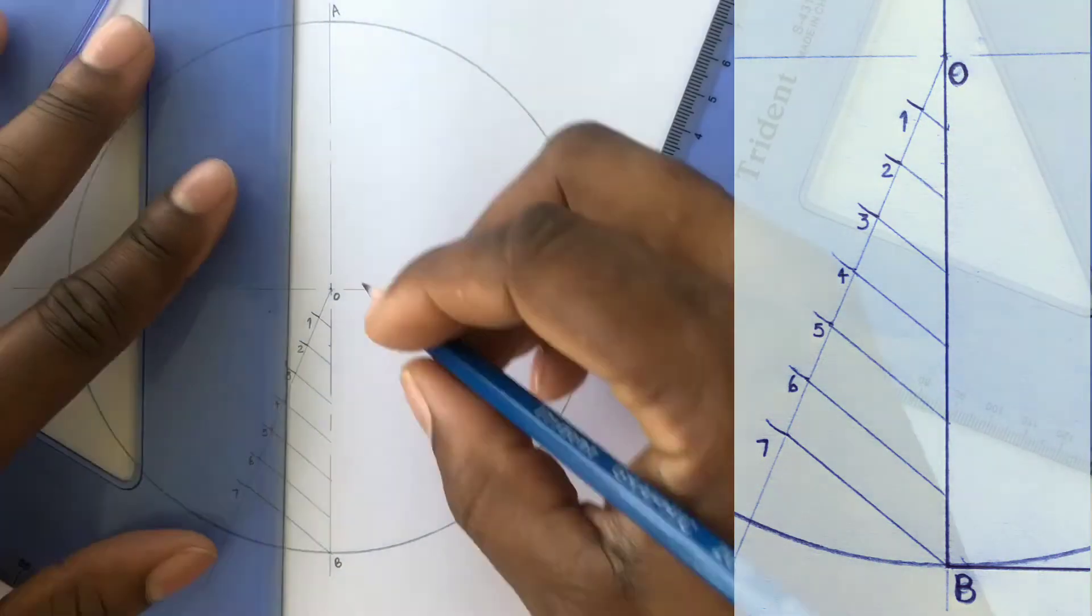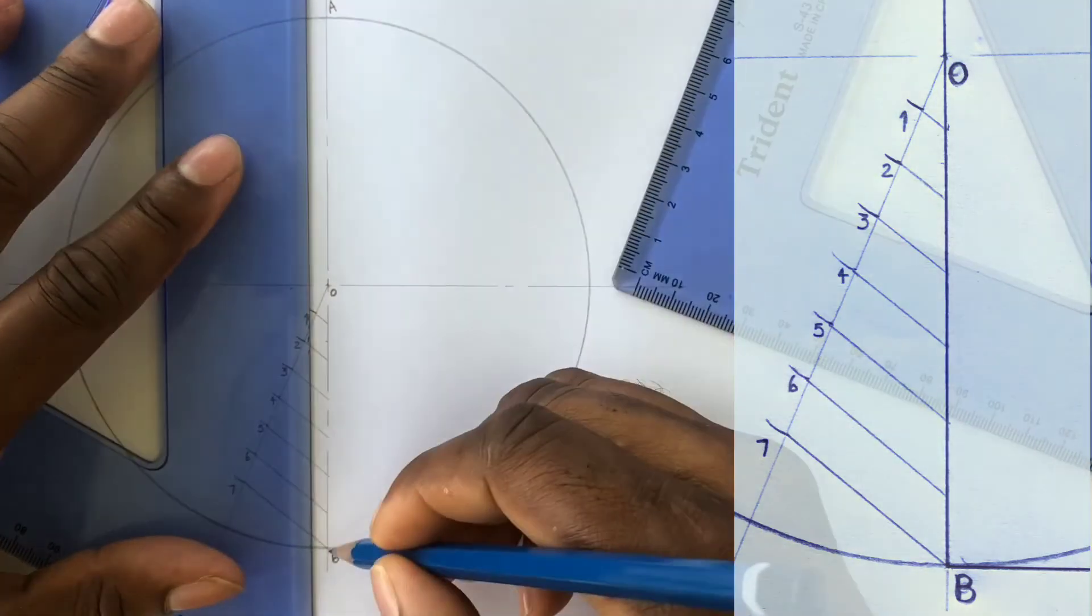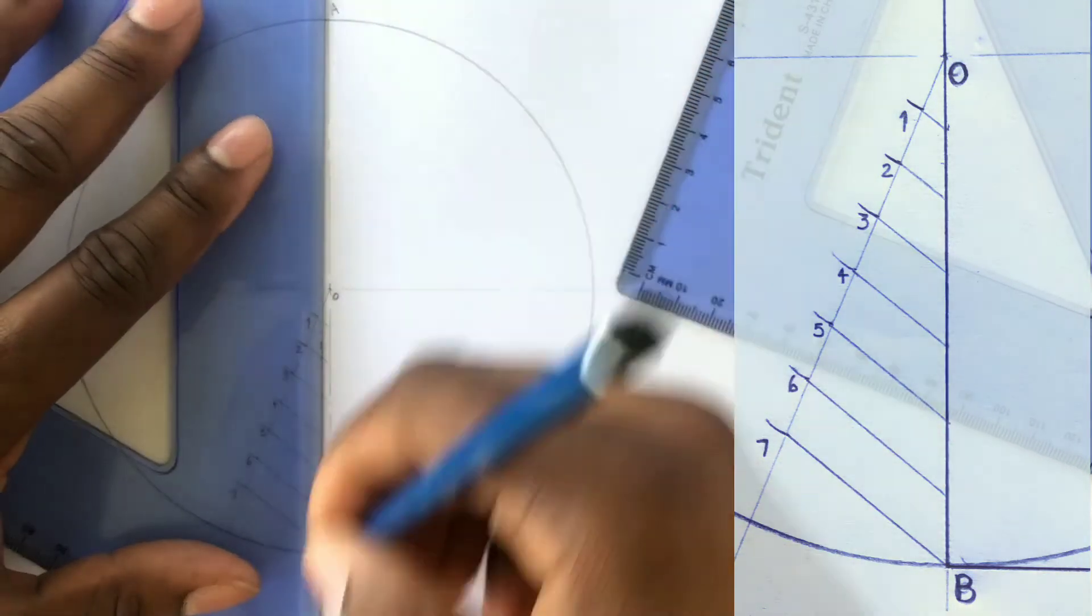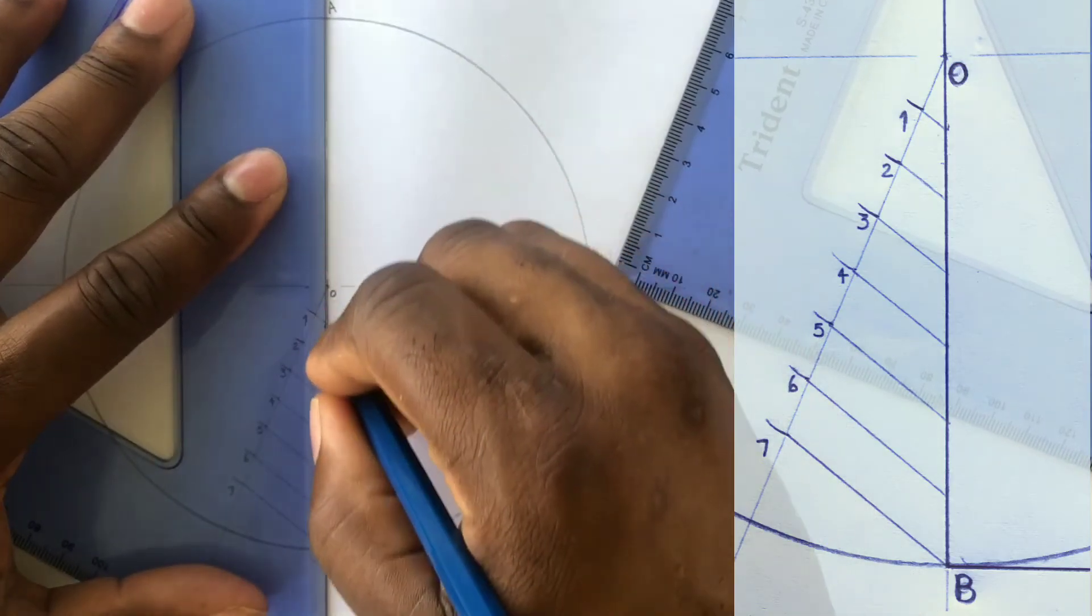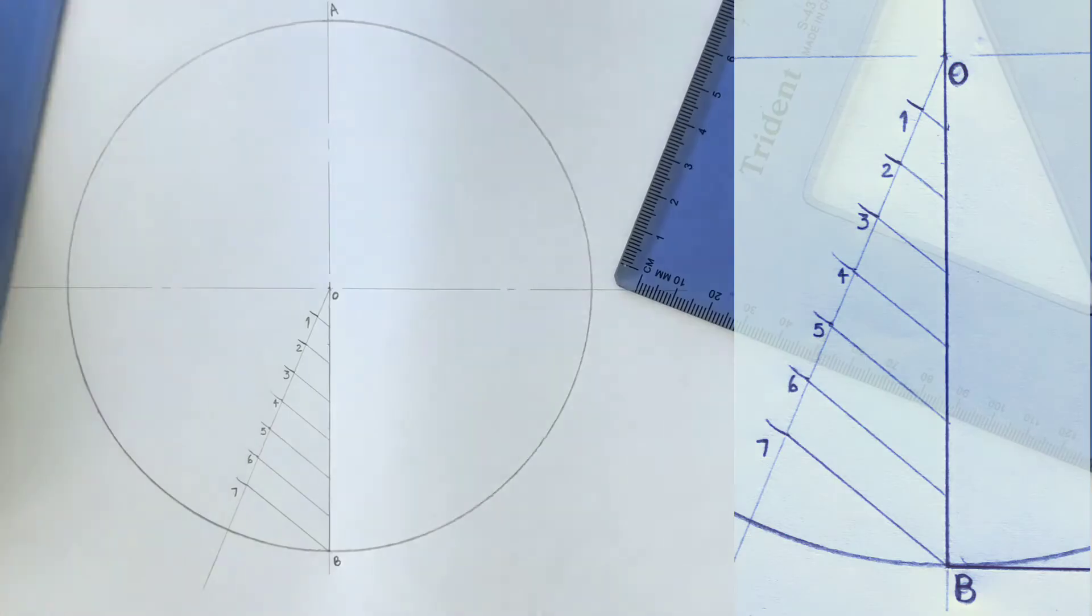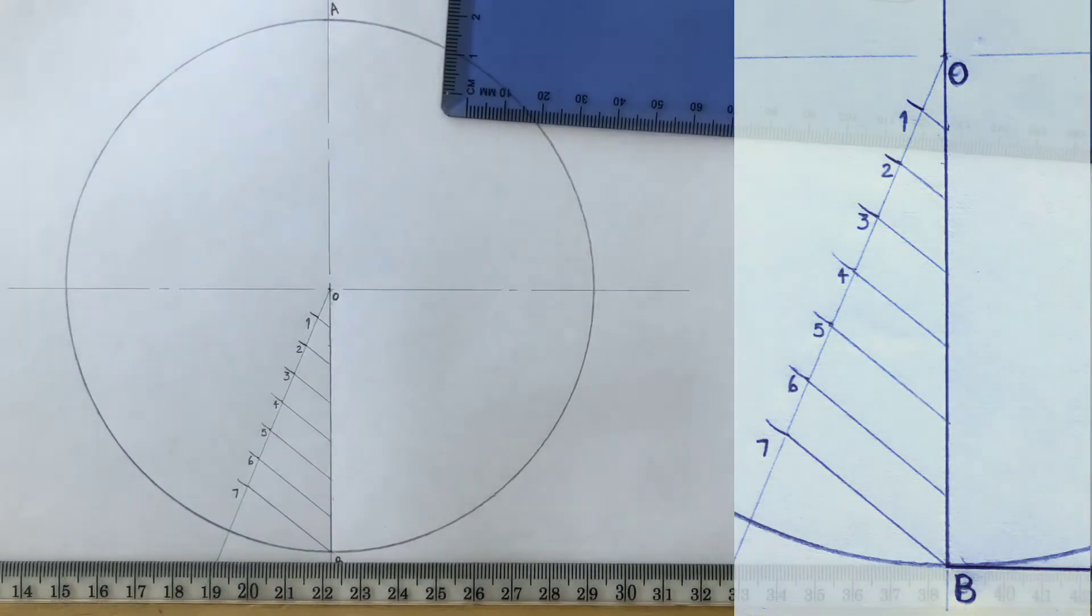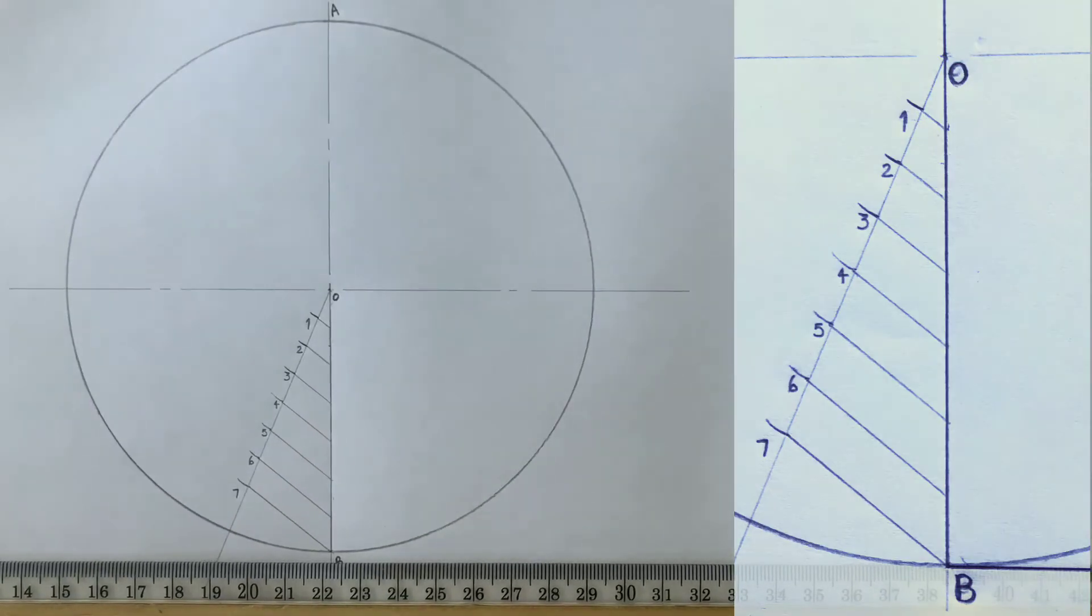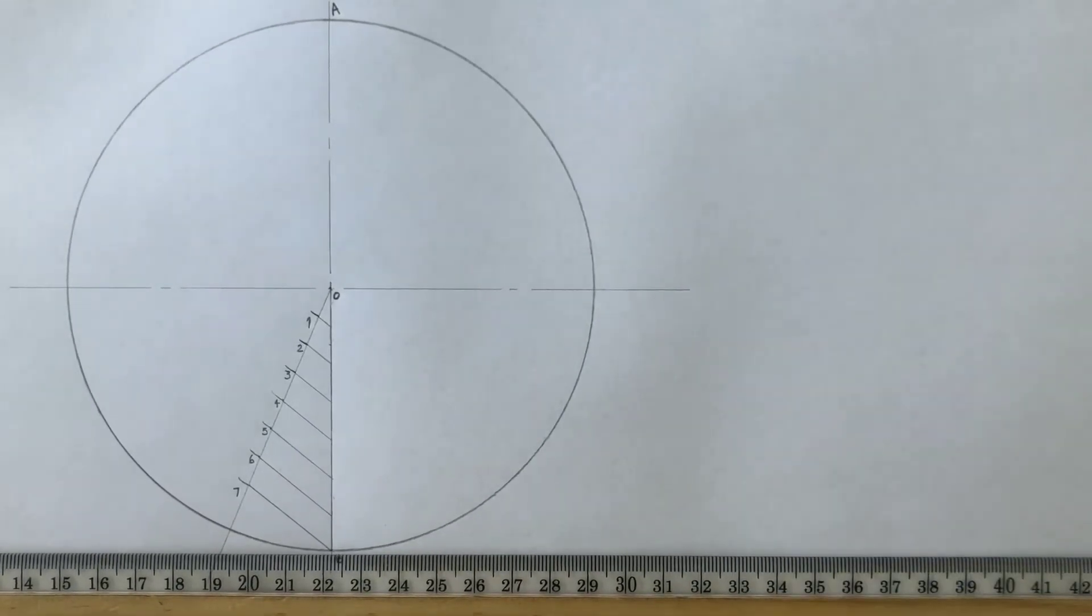You may now outline OB for clarity sake. Using your T square, draw a tangent from point B towards the right of your paper.